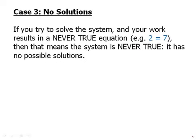If you try to solve the equation and your work results in a never true equation, you wind up with something like 2 equals 7, then it means that the system is never true. It has no possible solutions.